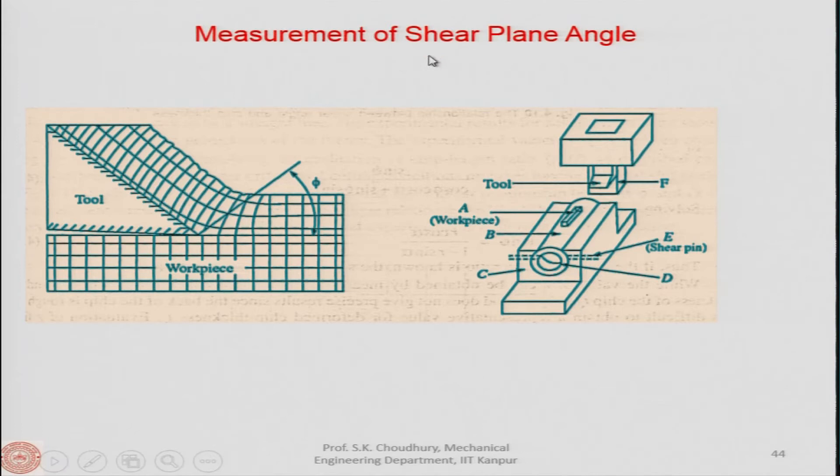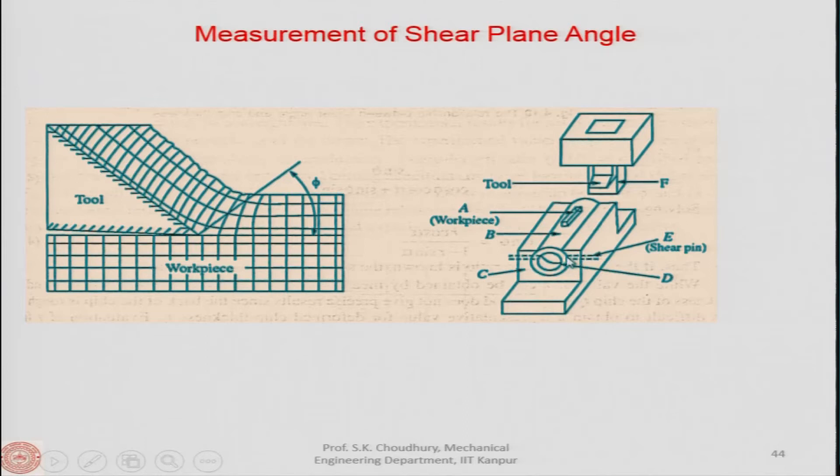There are two ways to find the shear plane angle. The first is experimental, using a device called the quick stop mechanism — a cylinder that can move freely and is stopped by a shear pin.